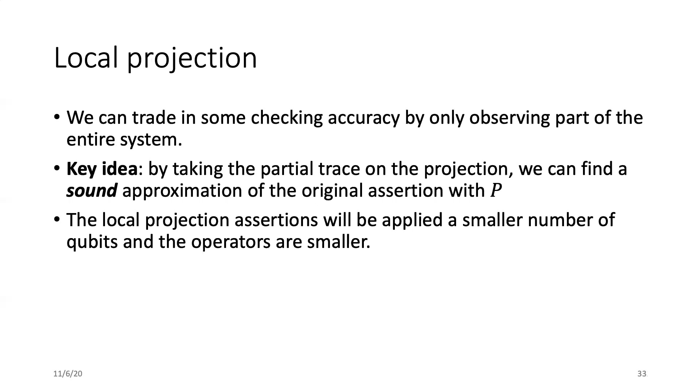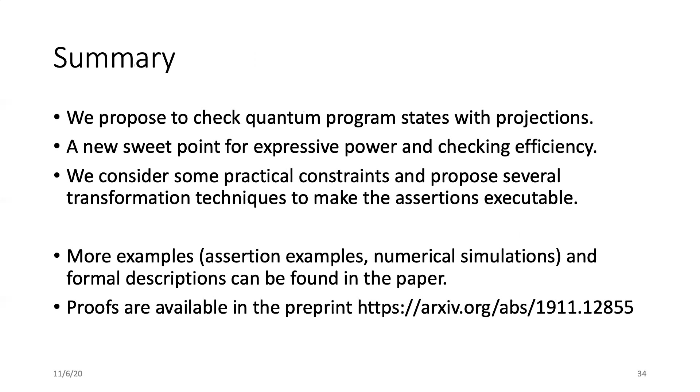We propose a technique called local projections. By taking the partial trace on a large size projection, we can find small size projections on part of the system which are sound approximations of the original P. Here is the summary. We propose to check quantum program state with projections and it's a new sweet point for expressive power and checking efficiency. We consider some practical constraints and propose several transformation techniques to make the assertion executable. More examples, like assertion examples, numerical simulations, and formal descriptions can be found in the paper. The proof of all the theorems are also in the preprint. Thank you for your attention.